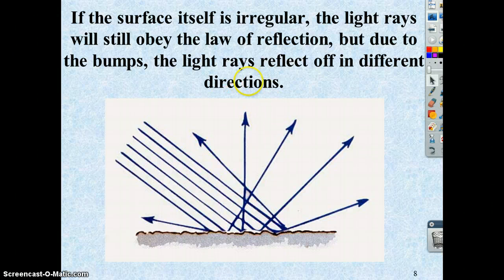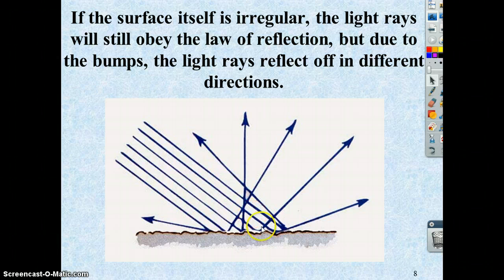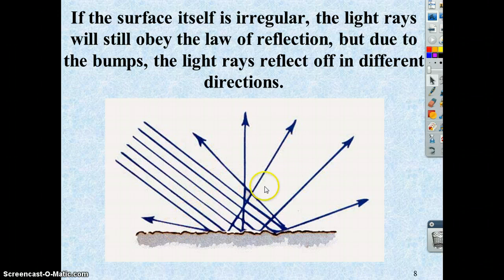So if I have an irregularly shaped surface, if I have all this light coming in, striking the surface, depending upon where it hits in these little valleys and hills, then the light's going to spread out on its way out, and you don't get a clear focused image then.